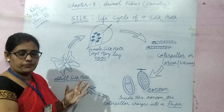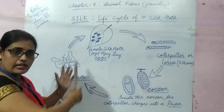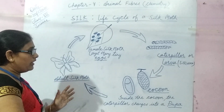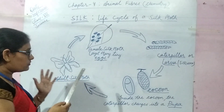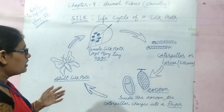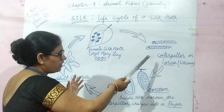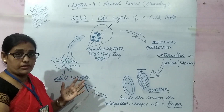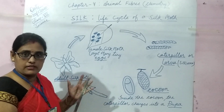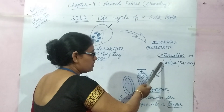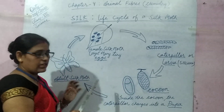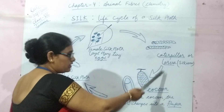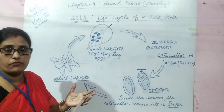The first stage of this life cycle is the adult silk moth — you can see it in the picture. The adult silk moth lays many tiny eggs. These eggs are hatched at a suitable temperature, which is also known as the incubation period. After hatching, a caterpillar or small baby larva comes out and they start eating mulberry leaves.